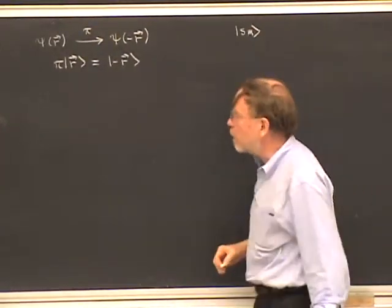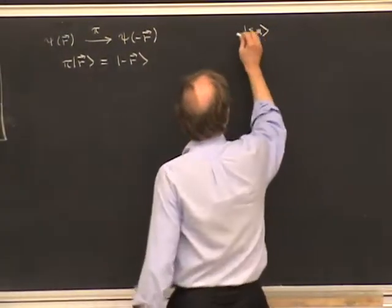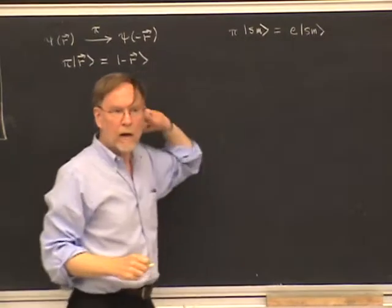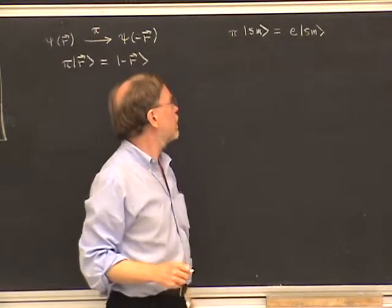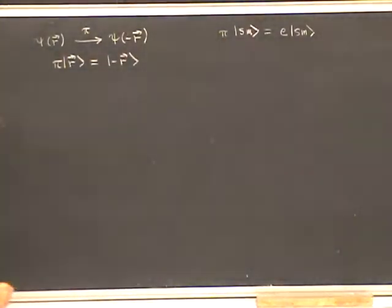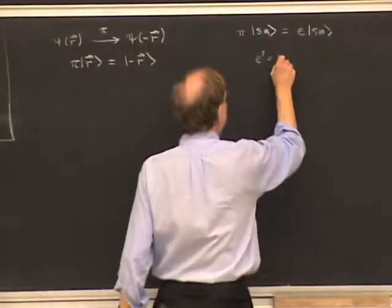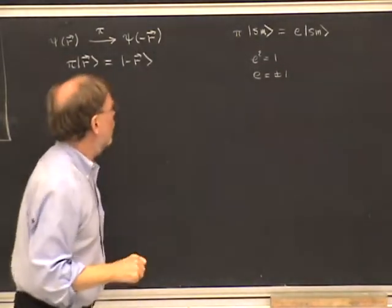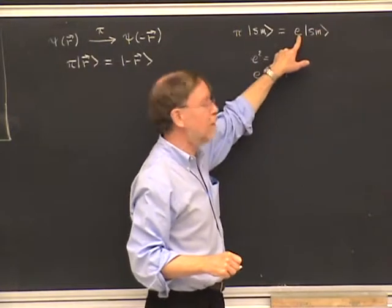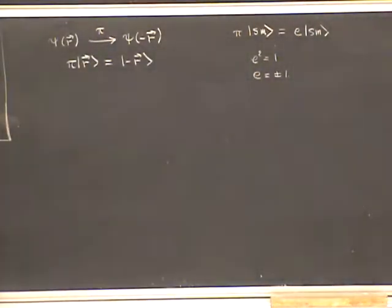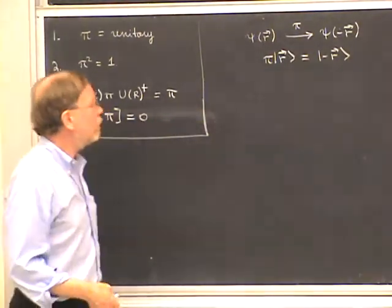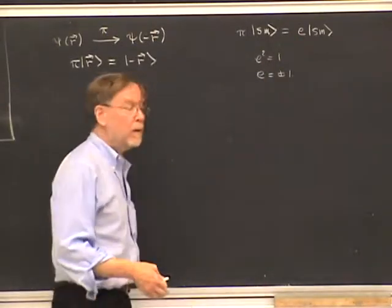By requiring parity to commute with J_z, we found that if parity acts on one of these basis kets, the result must be proportional to the same basis ket with a proportionality factor eta. Applying pi squared equals one tells us that eta squared equals one, so eta must be plus or minus one. Furthermore, since parity is a scalar operator, its eigenvalue is independent of the magnetic quantum number M — you can see this by applying raising and lowering operators.